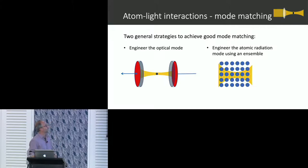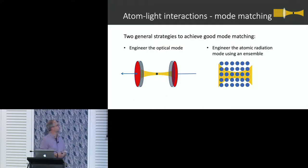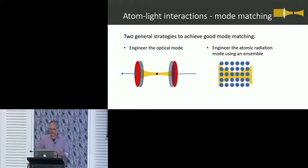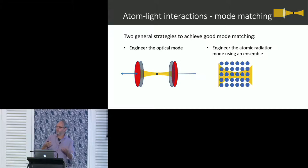The two strategies I tend to work with: we either engineer the optical mode — go to a parabolic mirror or cavity QED — or we engineer the radiation mode of the absorber, and the simplest way of doing that is go to an ensemble. I'll describe both techniques and how they relate to each other, along with the benefits and issues of each, and where you'd use them for what sort of device.